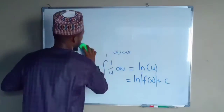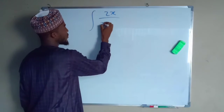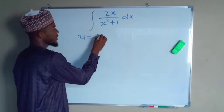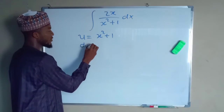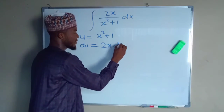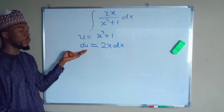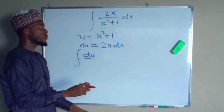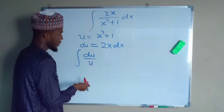Now let us look on to some examples. Let us evaluate the integral of 2x divided by x squared plus 1 with respect to x. Let u equal the denominator, which is x squared plus 1. The derivative of u with respect to x is equal to 2x, because the derivative of a constant is 0. So du equals 2x dx. We have 2x dx in our expression, which we can substitute with du. This gives us the integral of du divided by x squared plus 1, which we have said is equal to u.